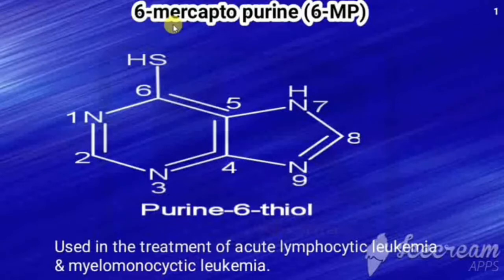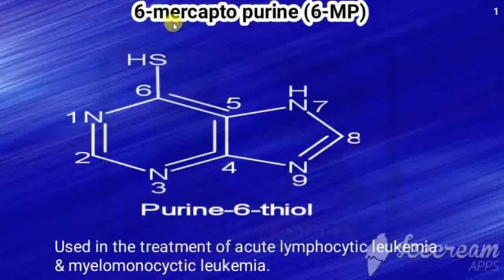This is the third class of anti-neoplastic agents. In two previous classes we have seen alkylating agents, and in the second class we saw an introduction about anti-metabolites. Now we will see the first drug under anti-metabolites, that is 6-mercaptopurine.